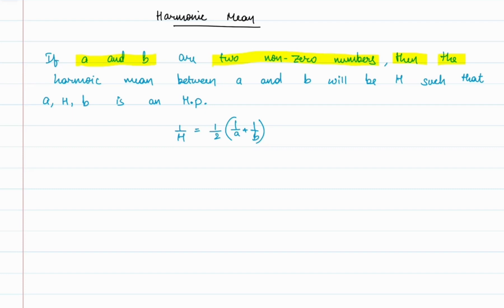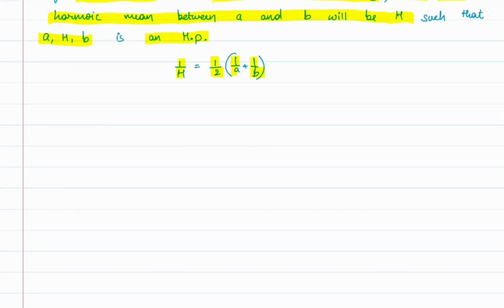The harmonic mean between a and b will be H such that a, H, b is a sequence in HP. The relation between a, H, and b will be that 1/H is equal to (1/2) times (1/a + 1/b).